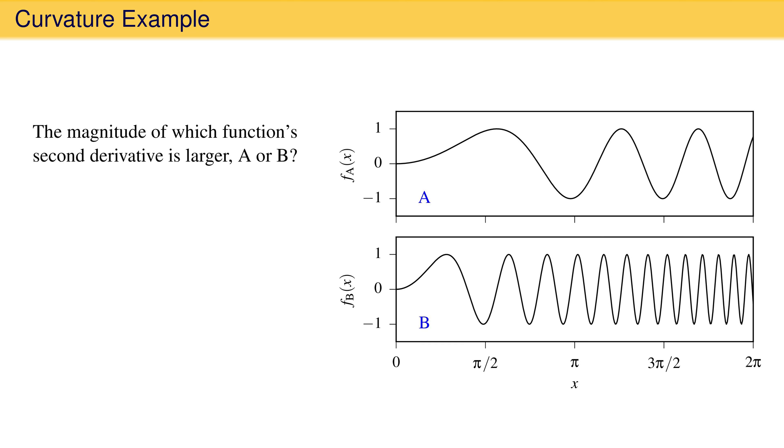The second derivative is not the same at every value of x for either function, but generally you can see that function B, the one in the lower panel, changes shape more rapidly and differs more from a straight line. In short, function B is more wiggly than function A. It therefore has a larger curvature and larger magnitude of the second derivative.